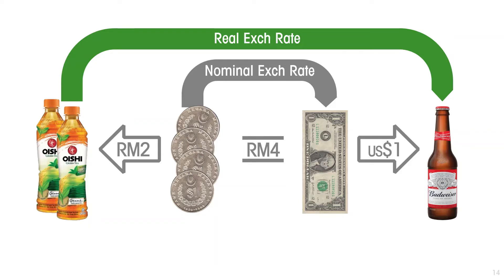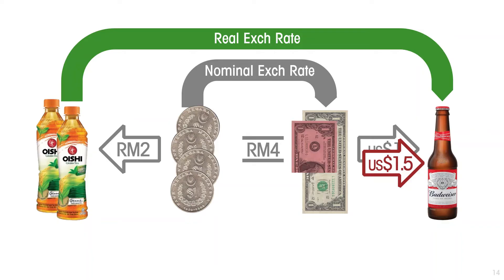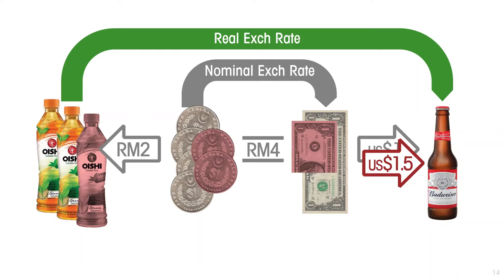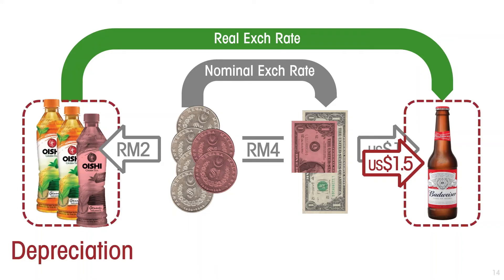Suppose the US experiences price inflation and other things remain unchanged — the exchange rate doesn't move and the Malaysian price level is stable. Let's say prices in the US go up by 50%, so the bottle of beer that used to sell for $1 now sells for $1.50. In this case, to get an American beer we need $1.50. At the exchange rate of 4 to 1, we now need 6 ringgits, which means producing and selling 3 bottles of tea. Whereas before 2 bottles of tea were equivalent to 1 beer, now it is 3 bottles — Malaysian products have depreciated in value.